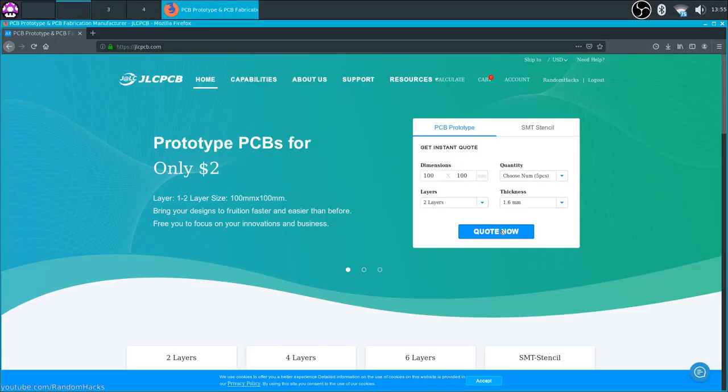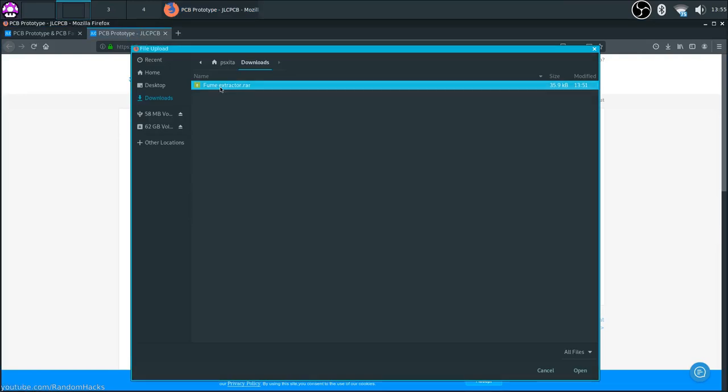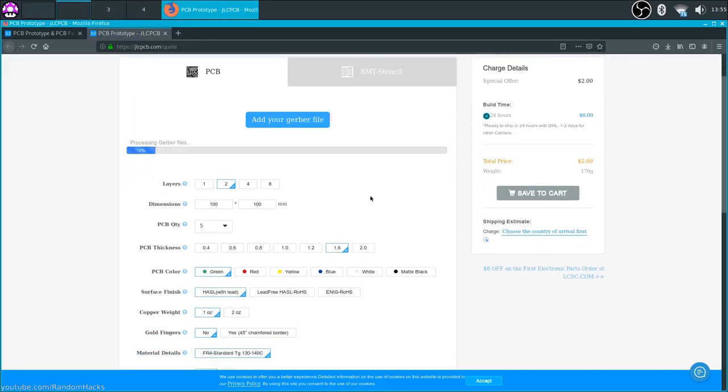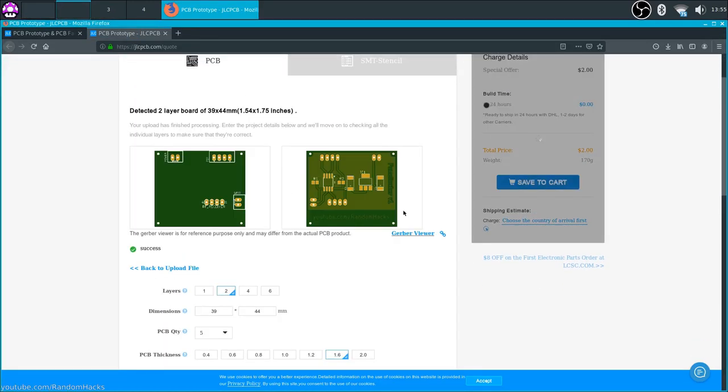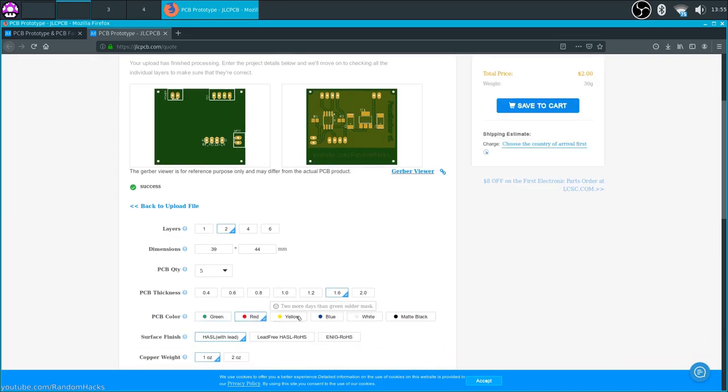This video is sponsored by JLCPCB, the largest prototype PCB manufacturer in China which offers good quality PCBs at a very attractive price. You can get 5 10x10cm double layer PCBs for only $2 plus shipping no matter which of the 6 solder mask colors you choose.